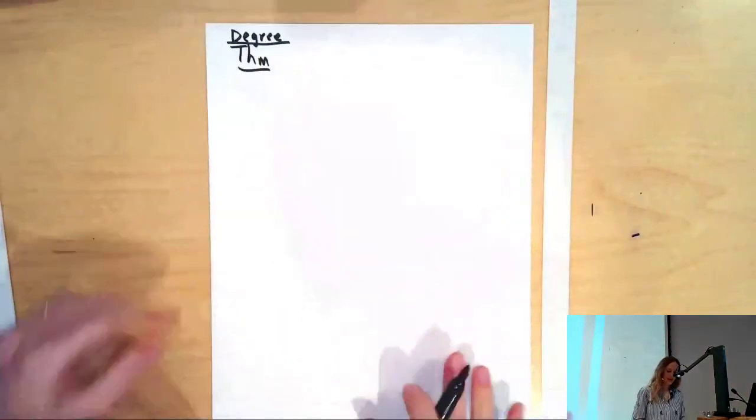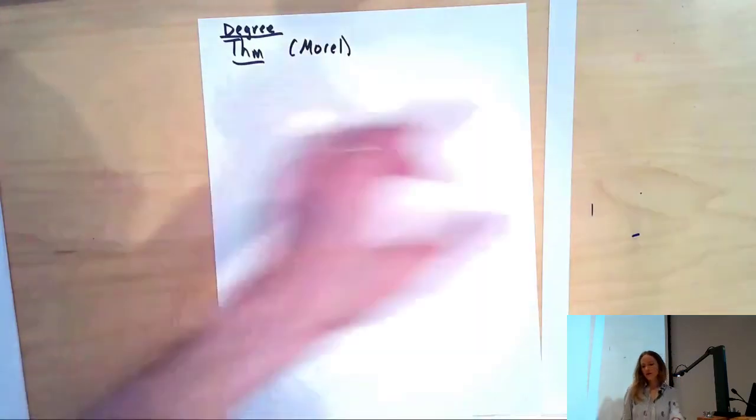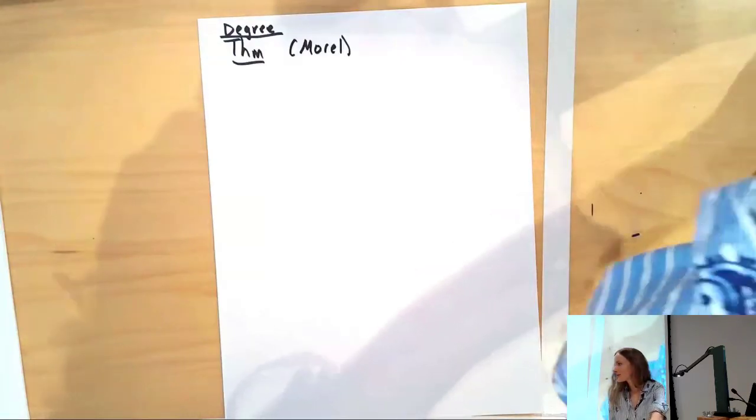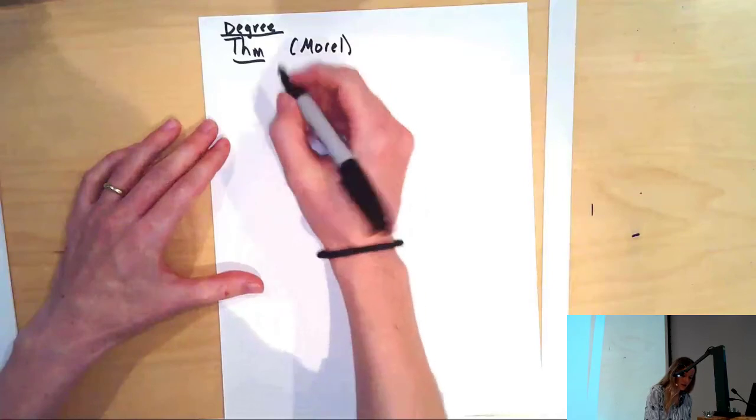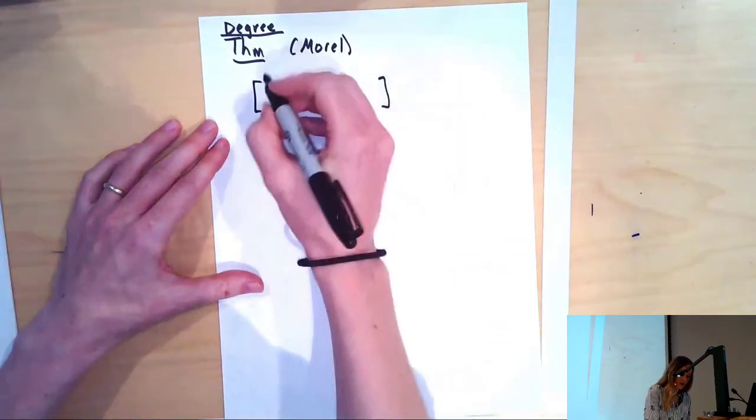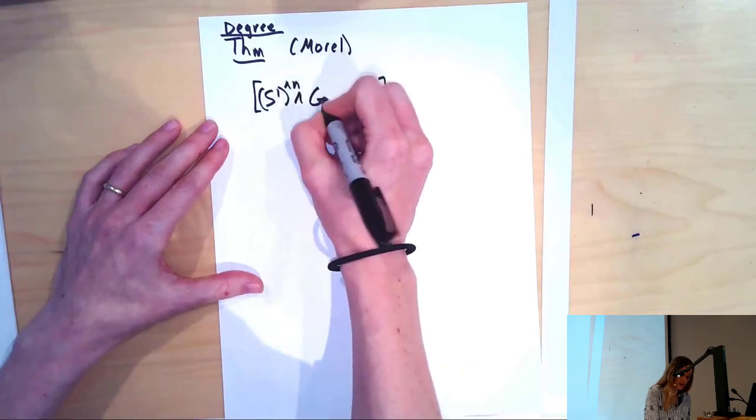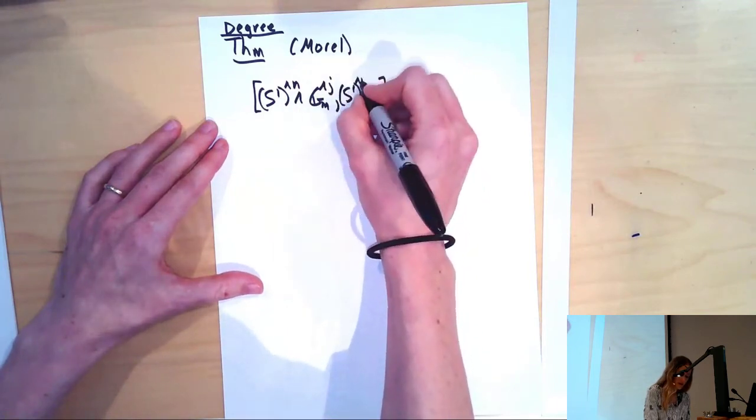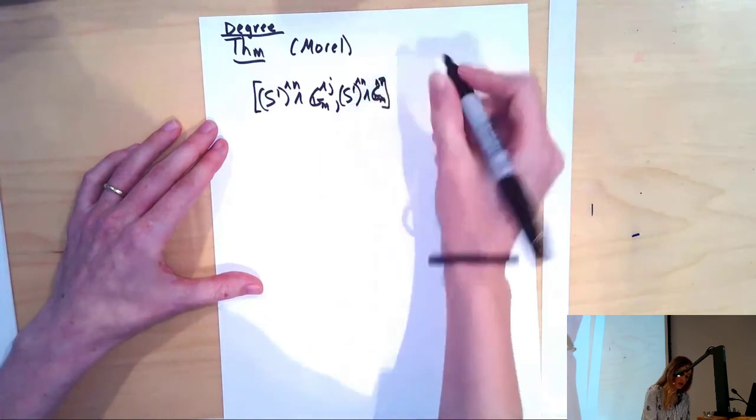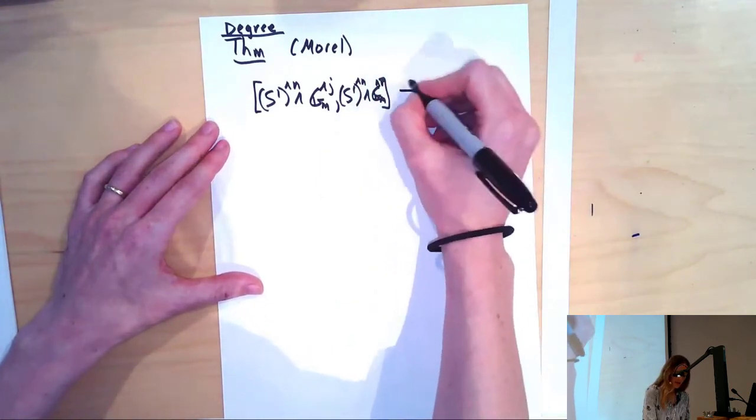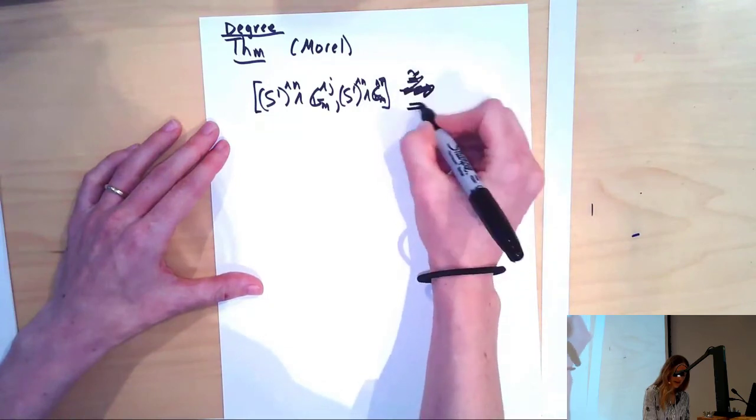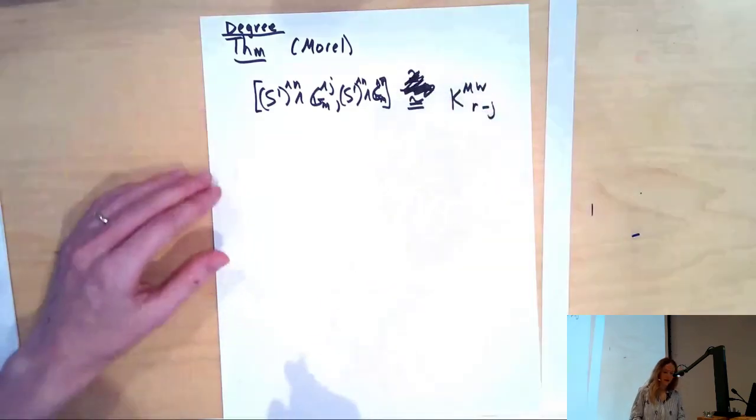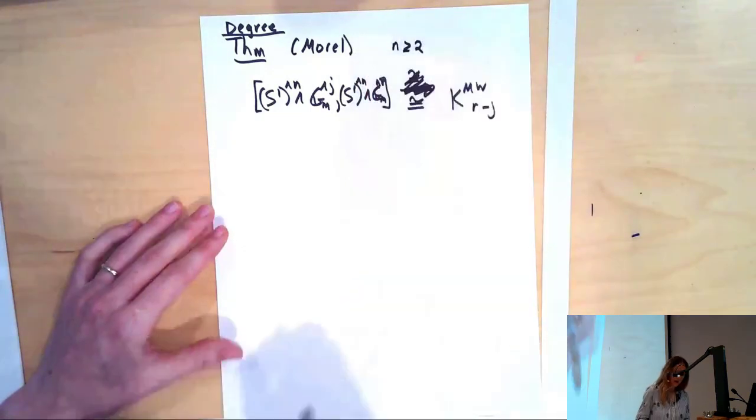This says that this magical combination of generators is homotopy groups of spheres, η corresponding to a Hopf map. So we have: [S¹]^n homotopy classes of maps [Gₘ]^j to [S¹]^n [Gₘ]^r, that this is isomorphic to K^MW_(-j)(R), n greater than or equal to 2. In particular, with our discussion of spheres, we have this for when j and r are also n.